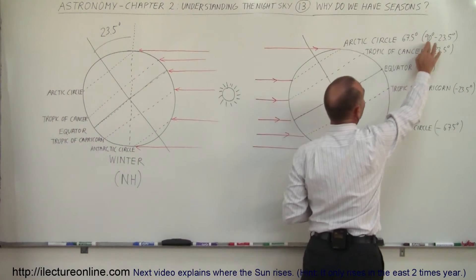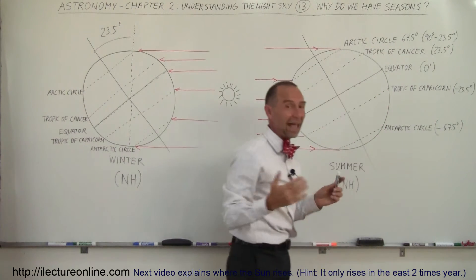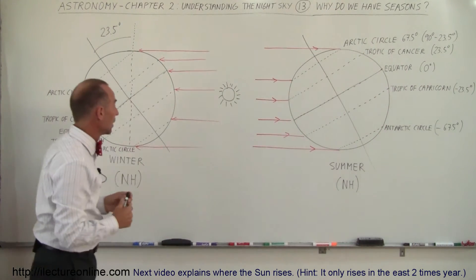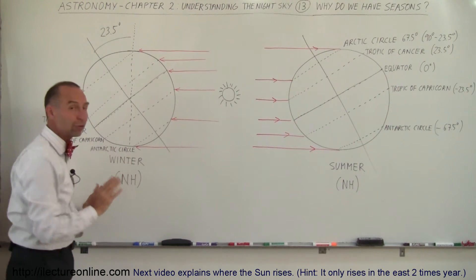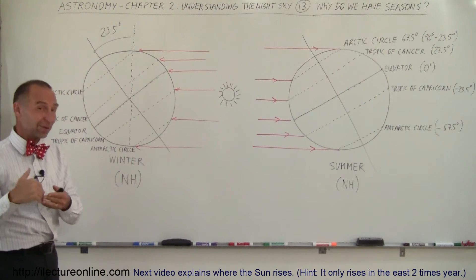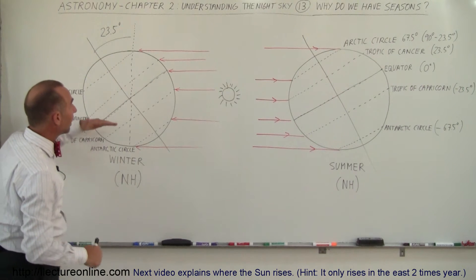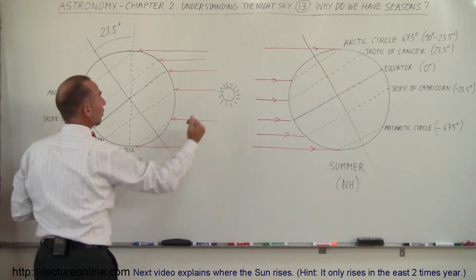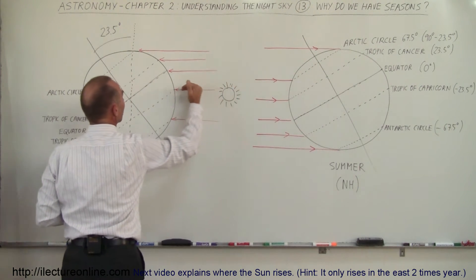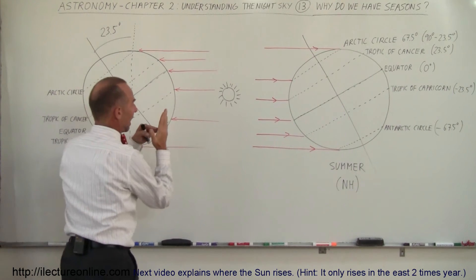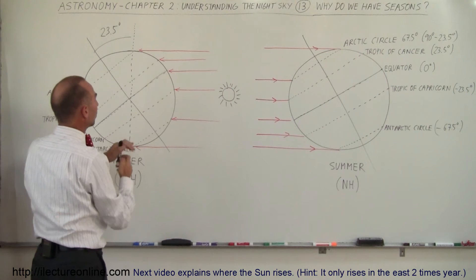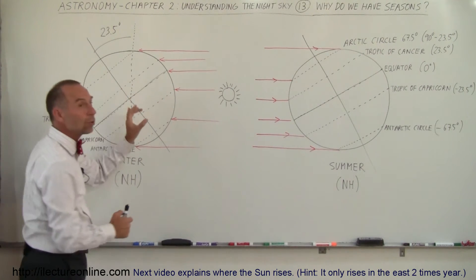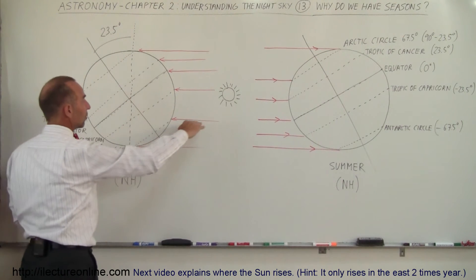67.5 degrees is 90 degrees minus 23.5 which is the tilt of the earth. Now notice when the earth is like this, this is winter time for the northern hemisphere. Of course it will be summer time for the southern hemisphere and you can see then that the sun will shine directly above the earth and hit the earth at a 90 degree angle here at the Tropic of Capricorn which is 23.5 degrees below the equator.